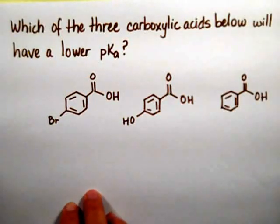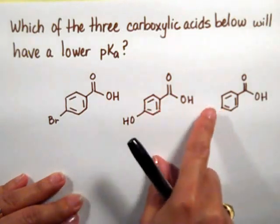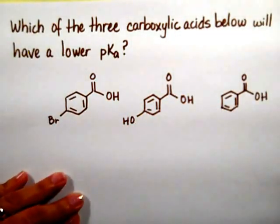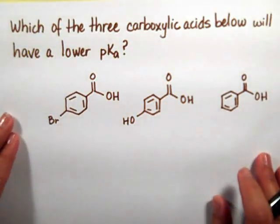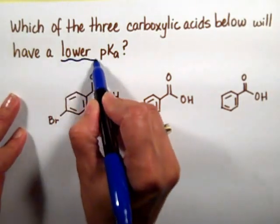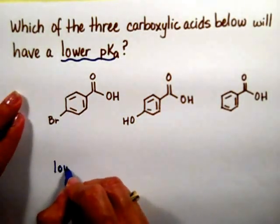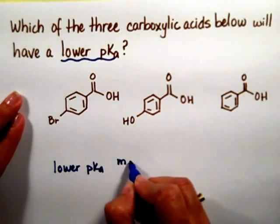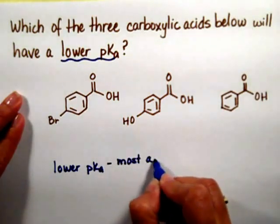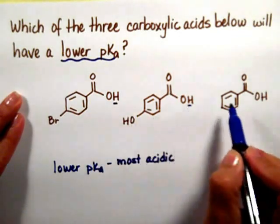Of course, we need to have a question about acidity. You cannot just talk about carboxylic acids without acidity. Notice again, the carboxylic acid itself is the same — the only difference is what is attached on the other side of the benzene ring. The question wants the carboxylic acid with the lower pKa. To review, the lower pKa means the most acidic, which means the hydrogen is the easiest to remove.